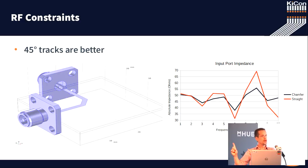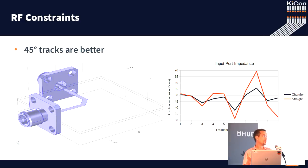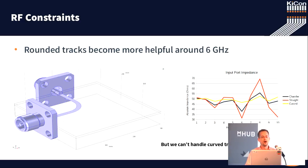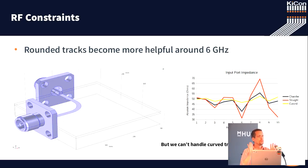Unfortunately, chamfered tracks are better but not a complete solution. If we can accept up to 10% variation in input impedance we're okay, but we can only accept about 2% input impedance variation, so we need to get better. Moving to rounded tracks — it's mostly flat across the entire spectrum. We're within about 1% over the entire range of concern. Rounded tracks are better at high frequencies; below about a gigahertz it doesn't really matter.